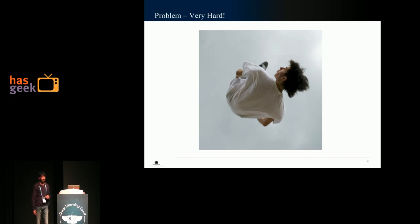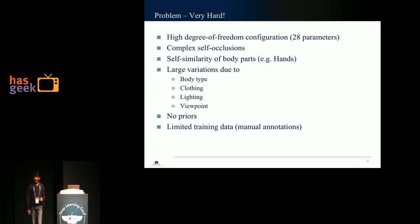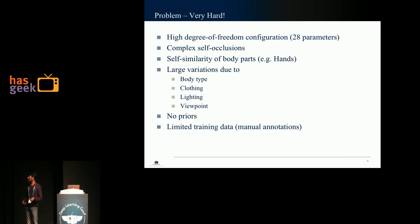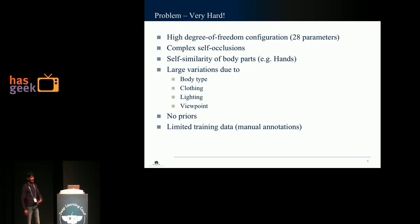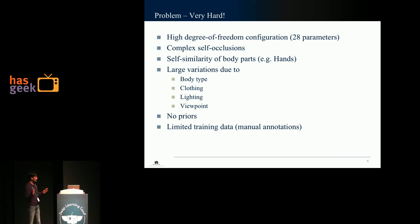It turns out it is also a very hard problem. For example, in an image such as this one, even I as a human cannot tell you with confidence where his right knee is. Why is this problem hard? Due to the high degree of freedom configuration of the human body — if we have 14 joints in 2D we have 28 parameters to optimize over. Also due to complex self-occlusion patterns from the highly articulate nature of the human body, so different body parts get covered by others. Also due to self-similarity of body parts — for example, hands can look very similar in an image.